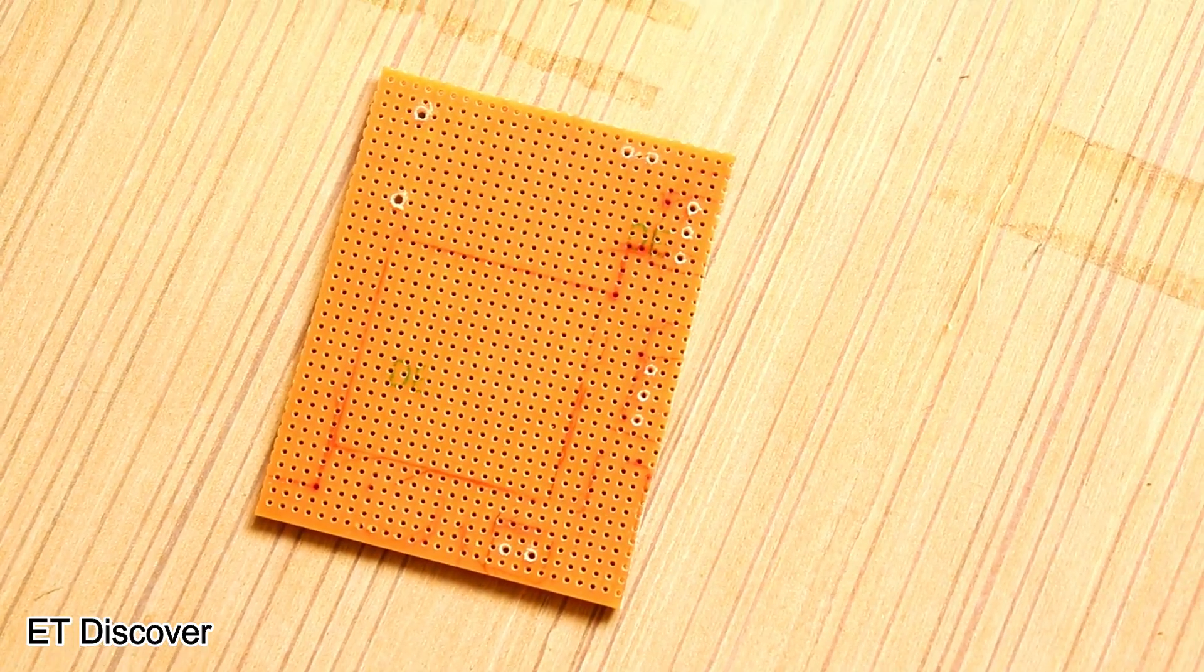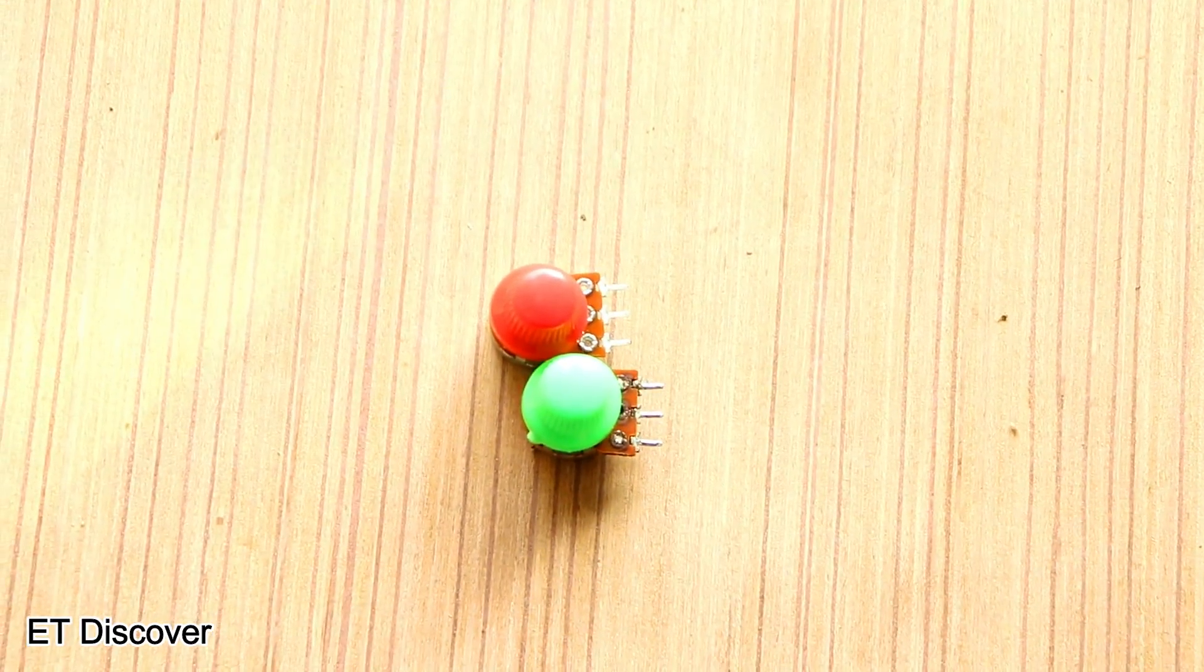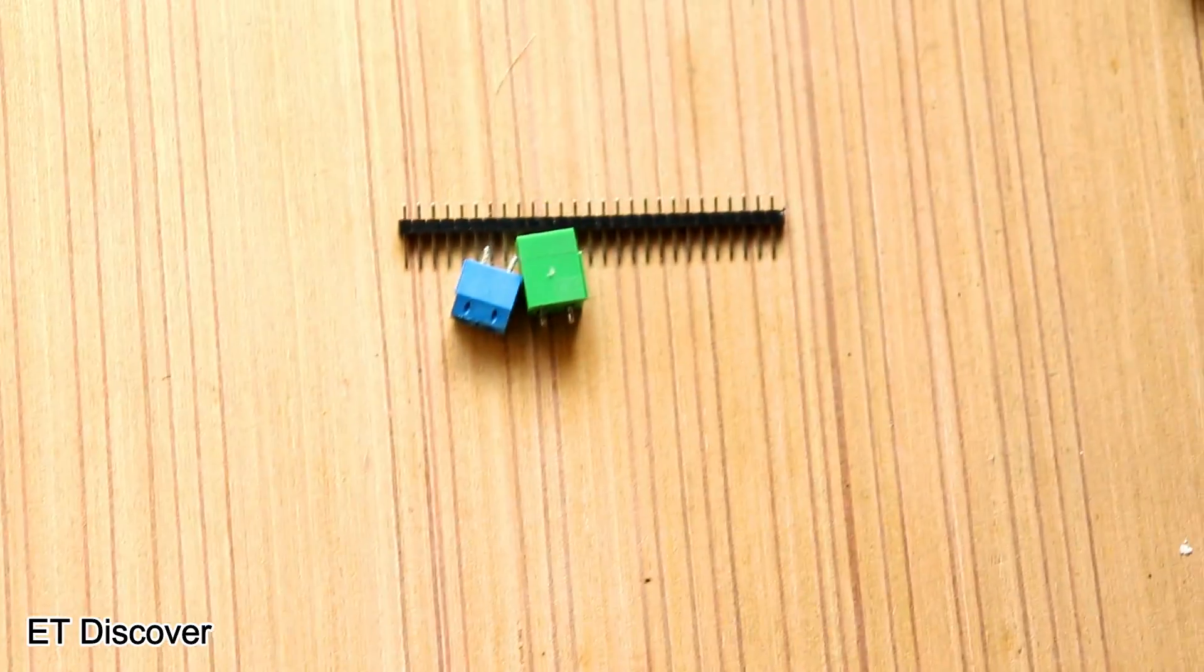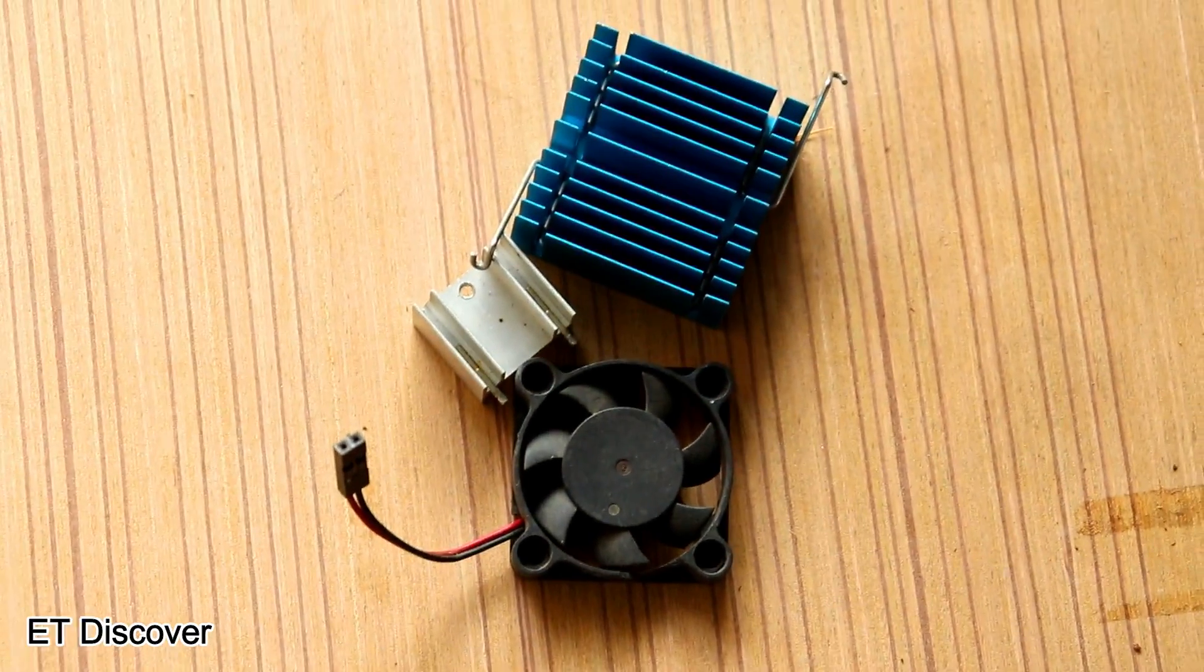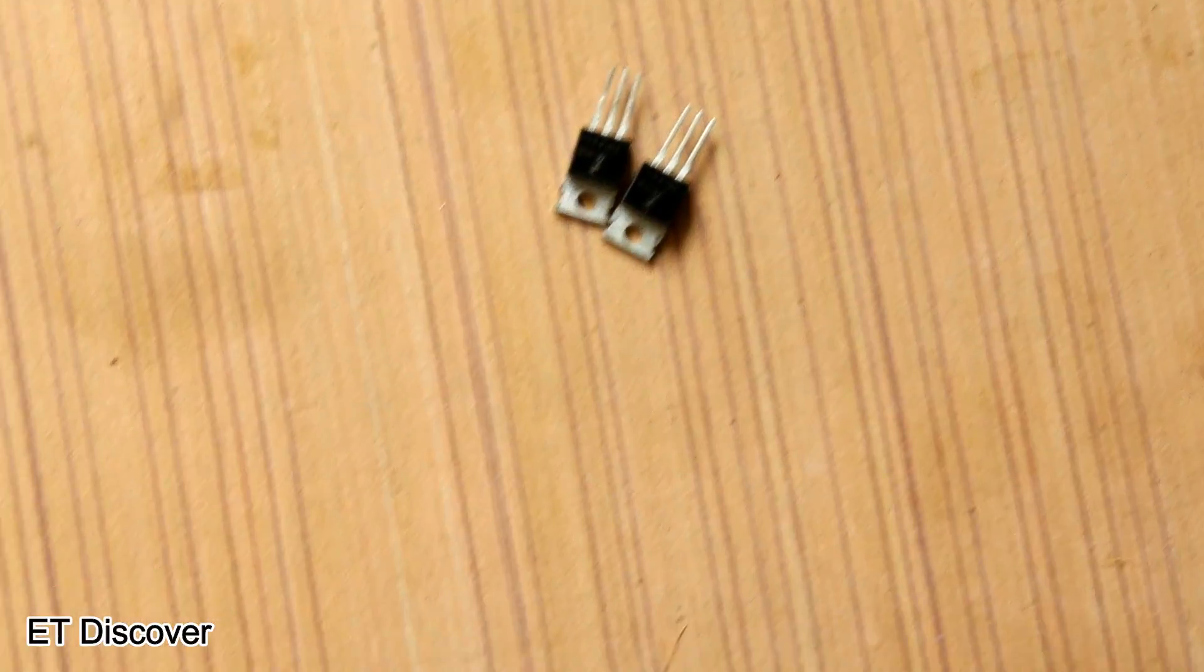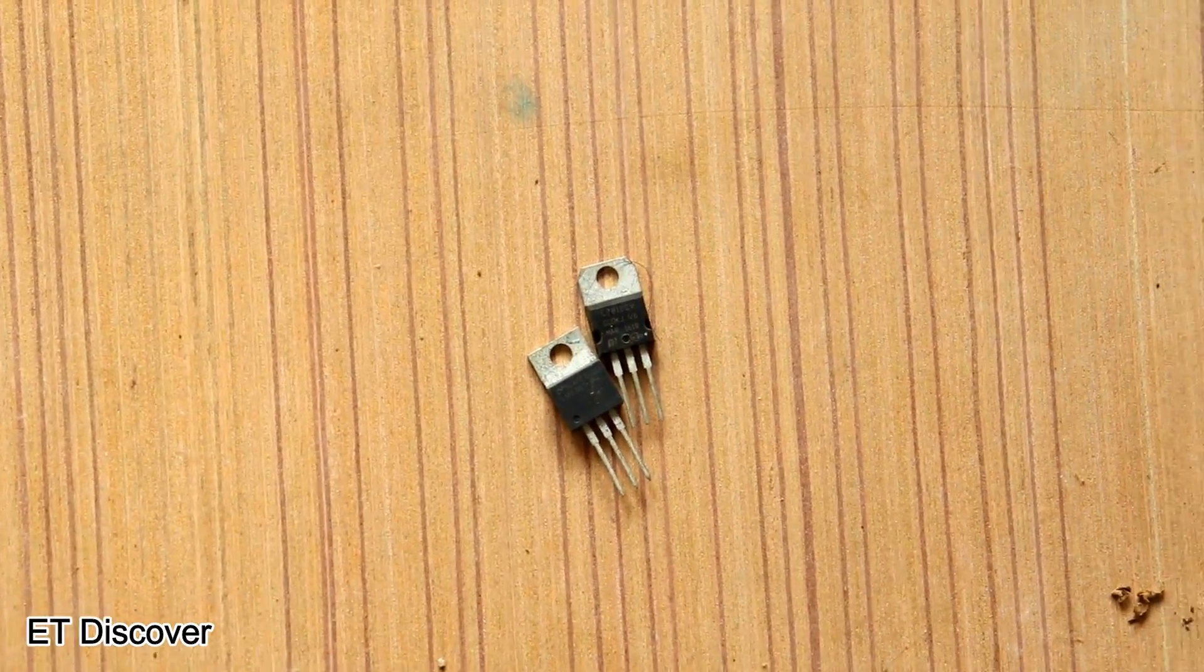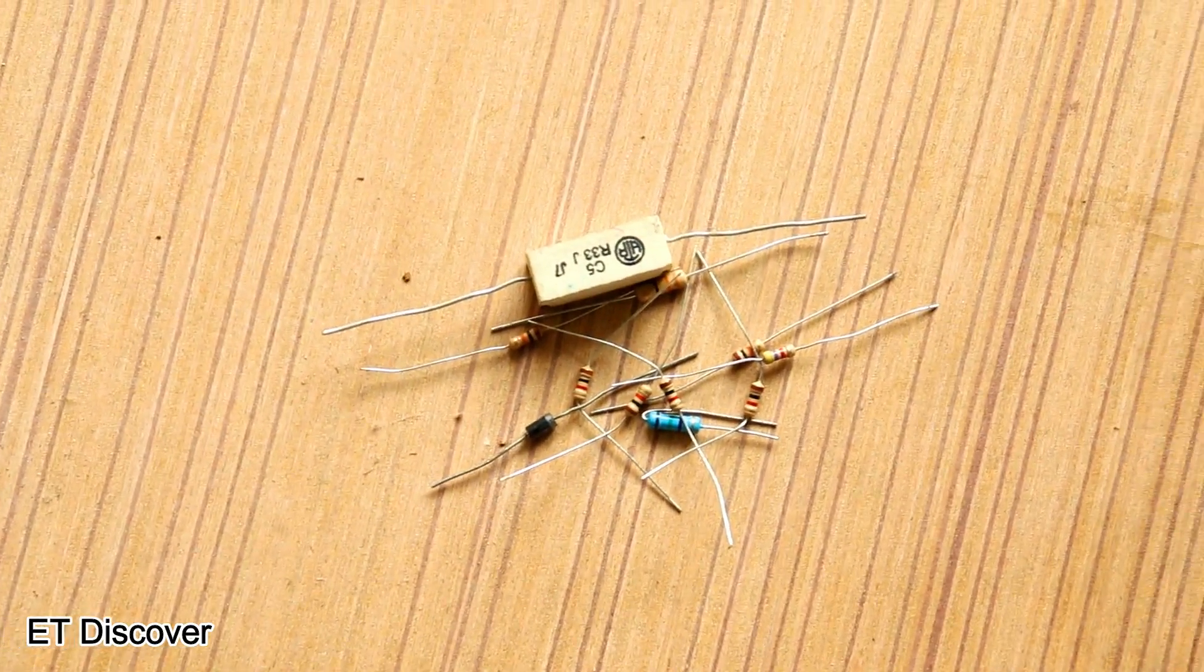To complete this project, you need copper dot board, variable inductor, 50K and 5K potentiometers, female jumpers and screw terminals, heat sink and 12V cooling fan, LM338 and 7812 chips, 2 PNP silicon power transistors which is TIP42, and a few resistors and LEDs.